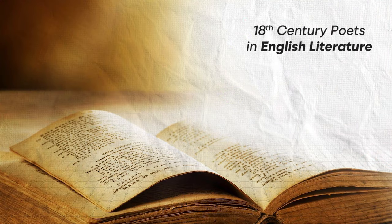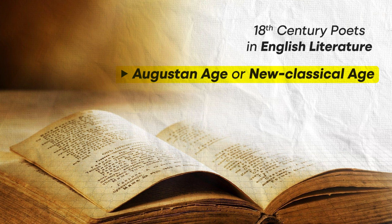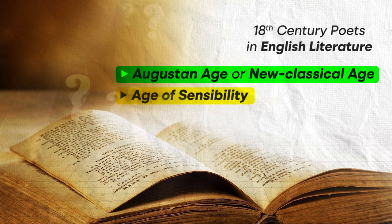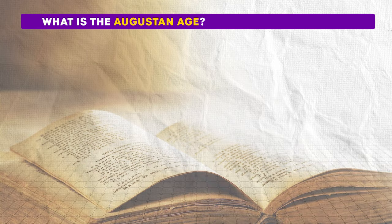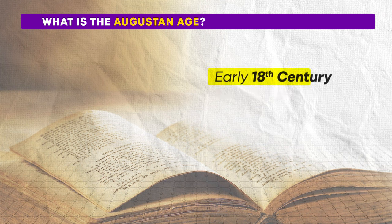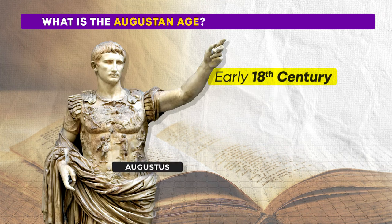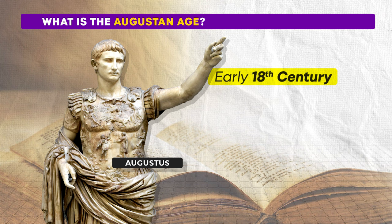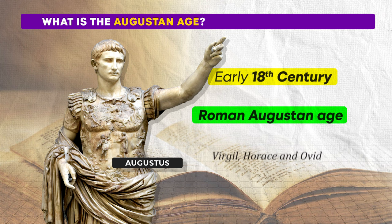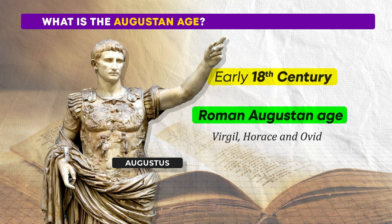The 18th century poets in English literature span across the Augustan Age or New Classical Age and the Age of Sensibility. First, let's try to understand what is this Augustan Age. The Augustan Age in literature refers to a period in English history during the early 18th century. It is named after the Roman Emperor Augustus because this period drew on the poetic traditions of the Roman Augustan Age, during which the writings of Virgil, Horace and Ovid were flourishing.